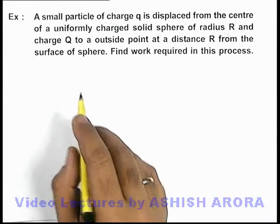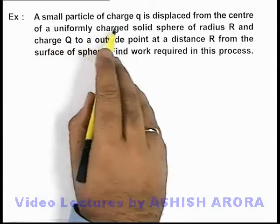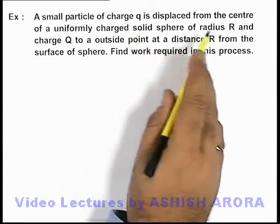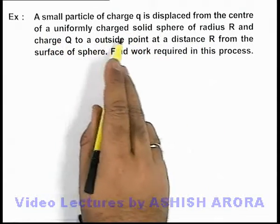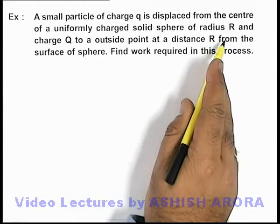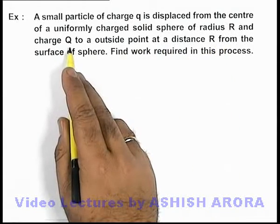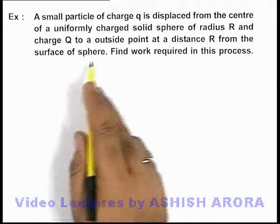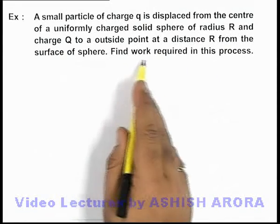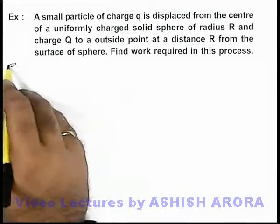In this example, we are given that a small particle of charge q is displaced from the centre of a uniformly charged solid sphere of radius R and charge capital Q to an outside point at a distance R from the surface of the sphere. We are required to find the work required in this process.